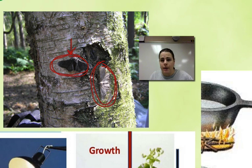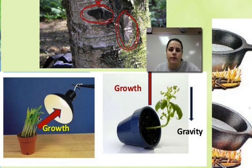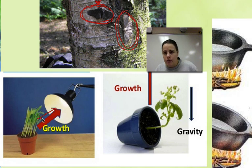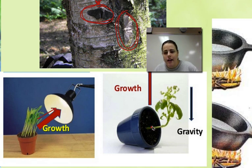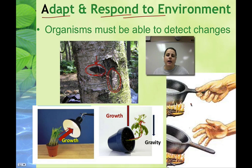Another example of responding to the environment is plant growth. Plants grow towards the light — a phenomenon called phototropism. You can see the plant bending toward the light; if you turn it away, over time it bends back. Plants also grow against gravity, so if you put one on its side it will turn upward again. Touching something hot is another example of responding to the environment.